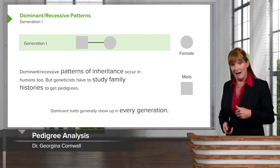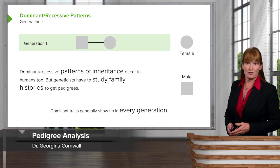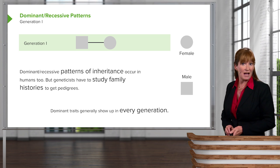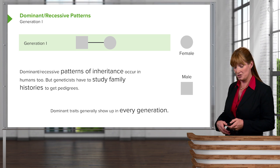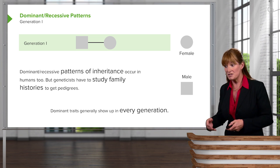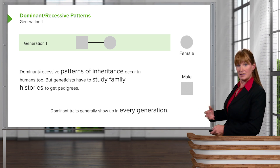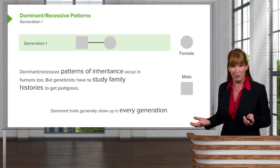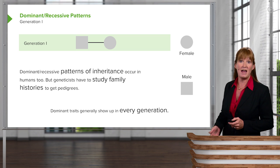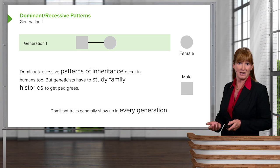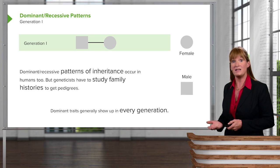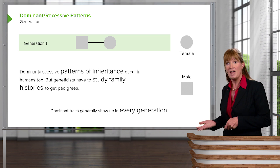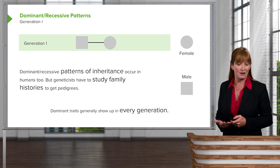Humans also have dominant and recessive traits. However, we have a much longer generation time, and so it's very hard to grow a few humans and watch what the flower color is and then have them self with each other — it doesn't really work out. So in humans, we really have to look at family histories or pedigrees. I wanted to briefly introduce you to a couple of pedigrees showing both dominant and recessive inheritance patterns.